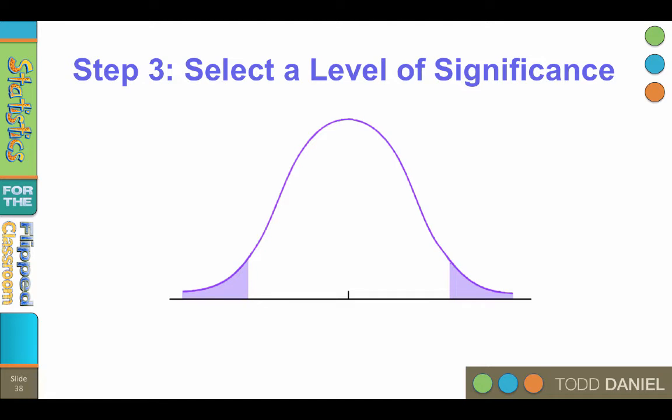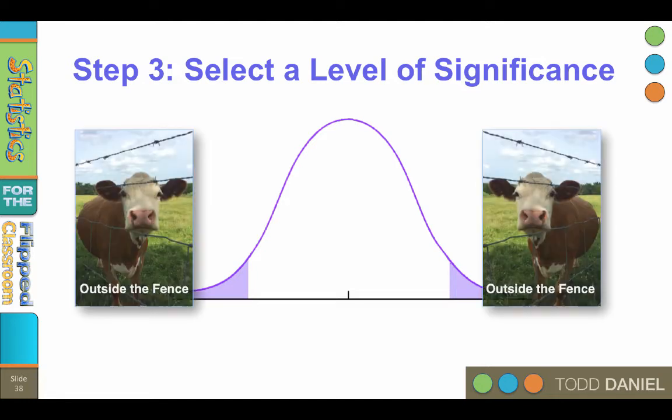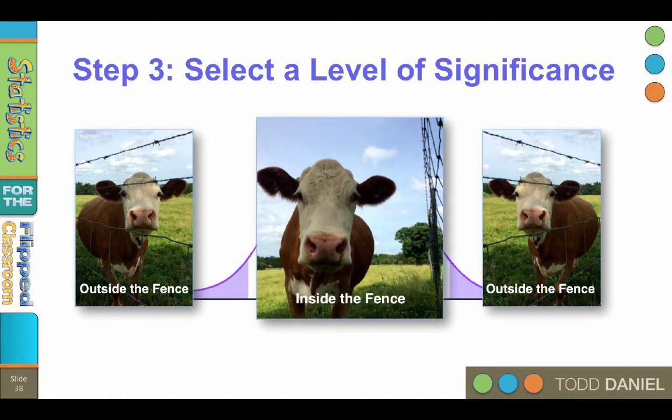We want to know whether our sample mean is outside of the fence or inside the fence. If the cow is the population mean and we are the sample mean, are we on a different side of the fence? Sample and population are different. Or are we on the same side of the fence, inside the fence? Sample and population are the same. Remember that we are testing a null hypothesis that the sample mean and the population mean are the same.